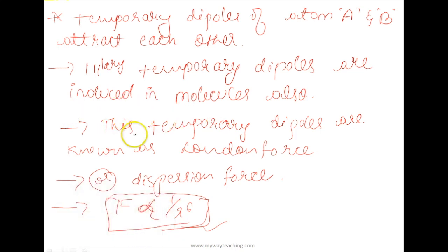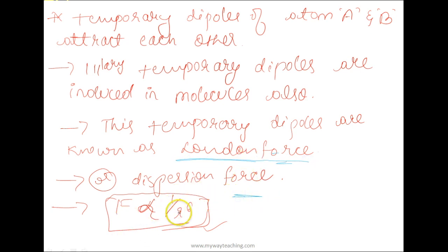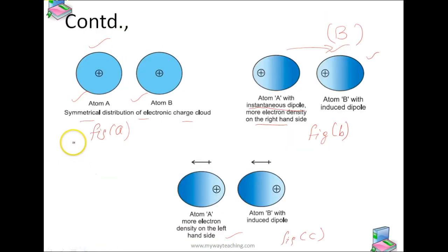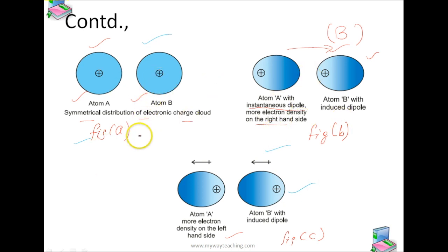Here you can see the figure showing London forces and dispersion forces. Figure A shows how the electronic charge is distributed symmetrically, figure B and figure C show the asymmetrical distributions. This completes the topic of dispersion forces or London forces.